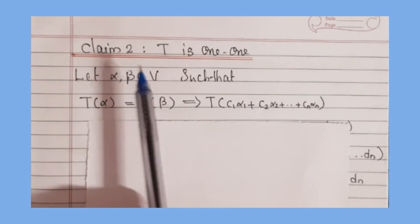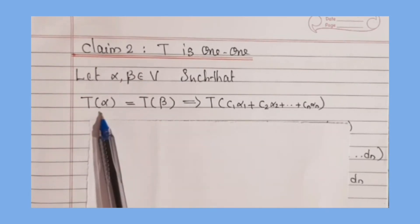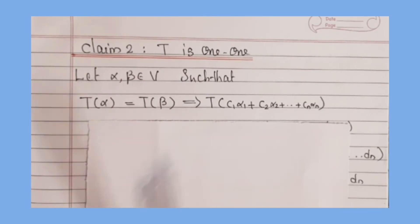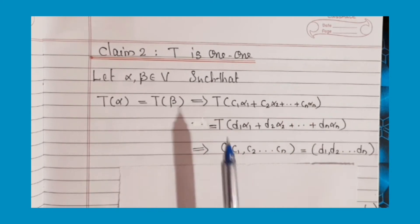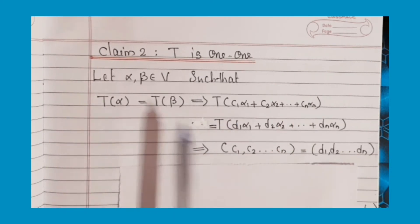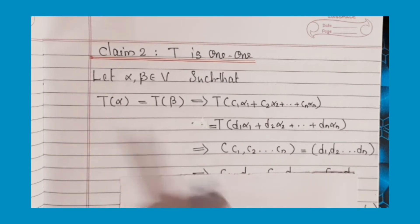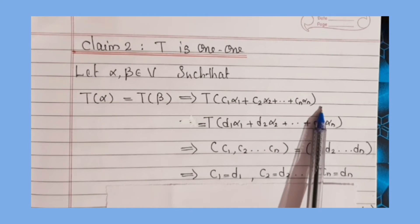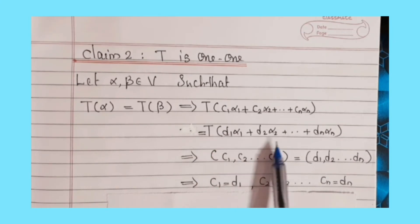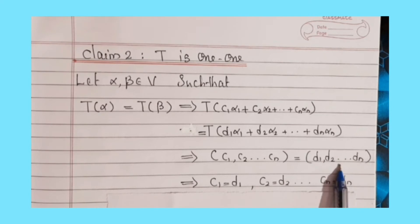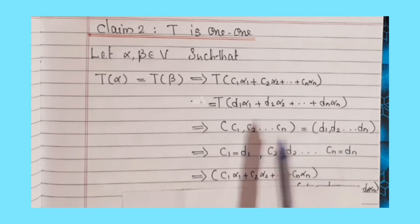Claim 2: T is one-to-one. Let α, β belong to V such that T(α) = T(β). Then (c₁, c₂, ..., cₙ) = (d₁, d₂, ..., dₙ), which implies c₁ = d₁, c₂ = d₂, ..., cₙ = dₙ.